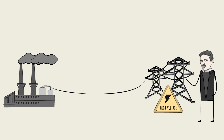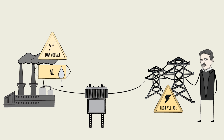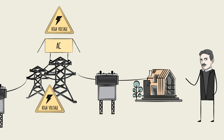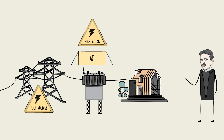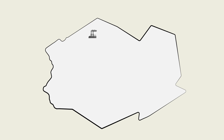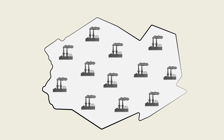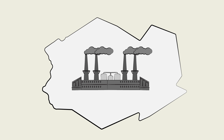Fortunately for Tesla, transformers — which can be used to change AC voltage — had already been invented. Transformers made it possible to increase AC voltage for long-distance transmission and decrease the voltage again for electricity consumption. This voltage interconversion ability removed the need to have a high concentration of power plants and made AC economically superior to DC.